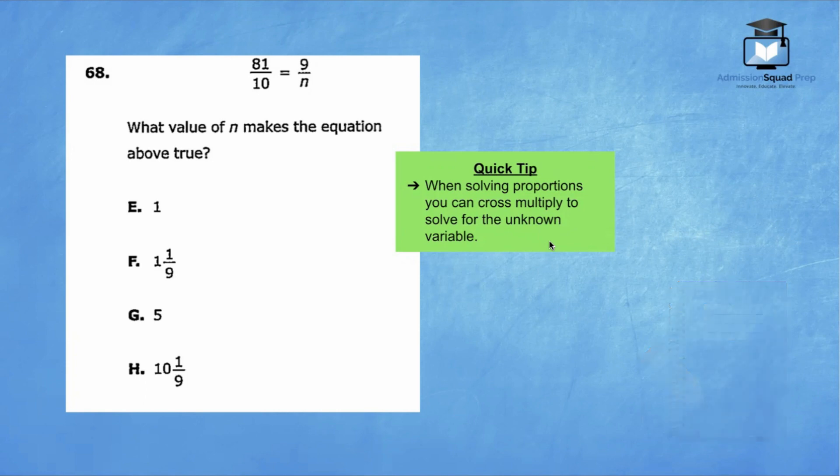For question 68, it says what value of n makes the equation above true? If you notice, this is a proportion. When solving proportions you can cross multiply to solve for the unknown variable. Let's give it a try.